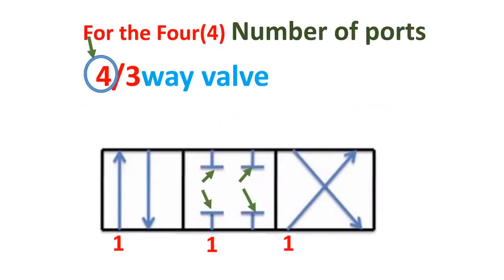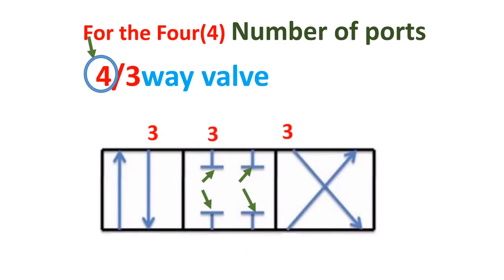This is a four three-way directional control valve. The four means the number of ports and the three means the number of switching positions or boxes. This is port number one, port number two, port number three, and port number four.